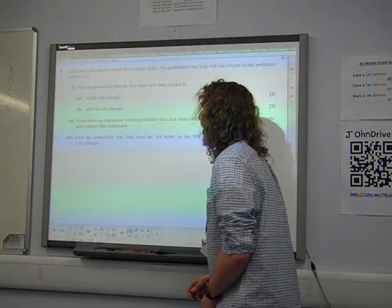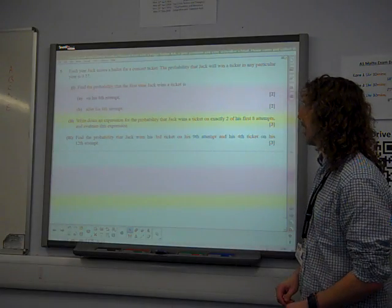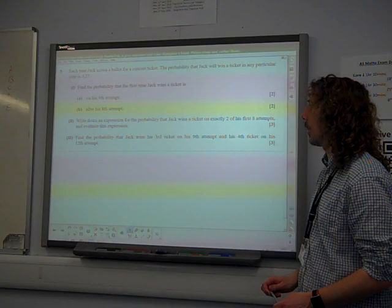Right, question five. Each year Jack enters a ballot for a concert ticket. The probability that he will win a ticket in any particular year is 0.27.